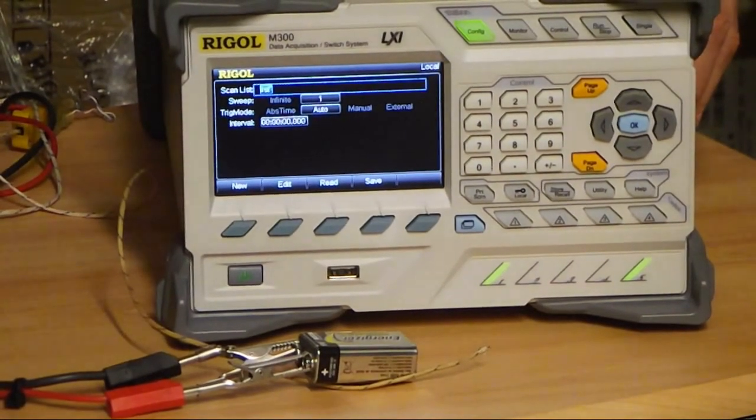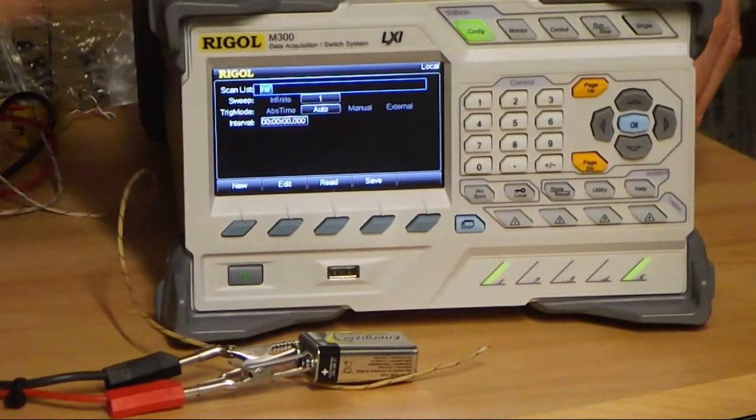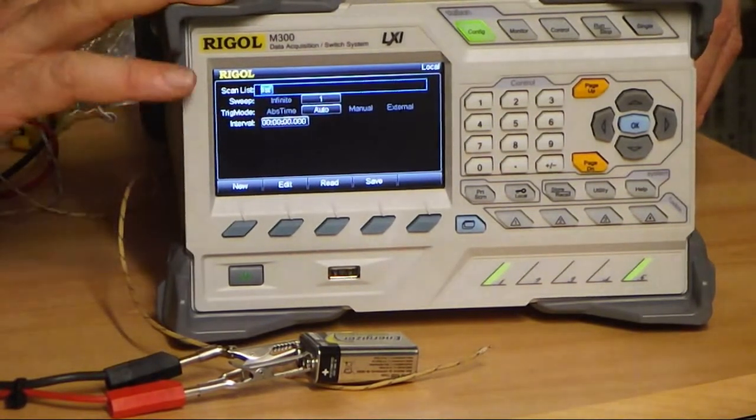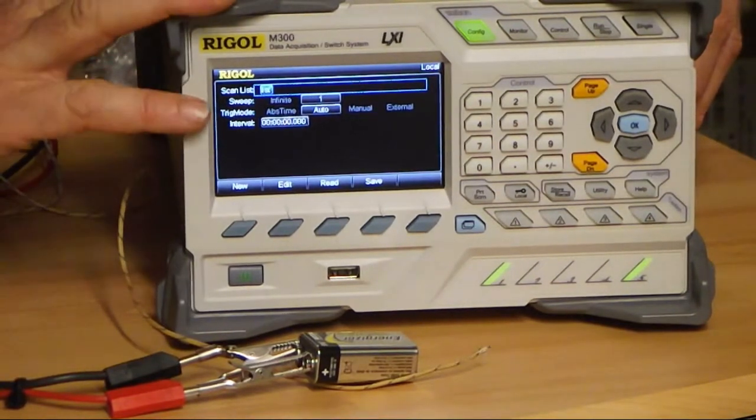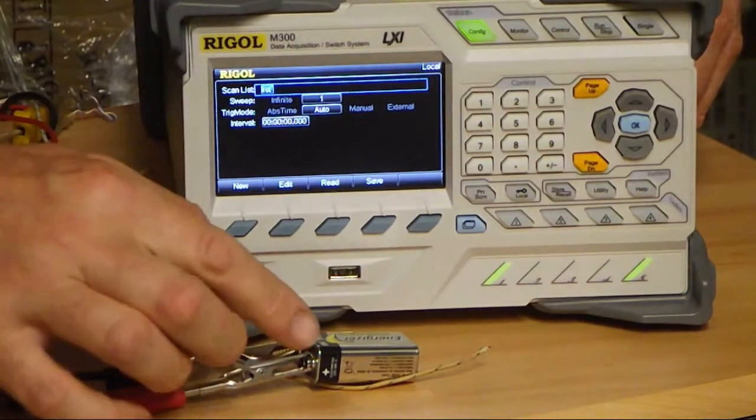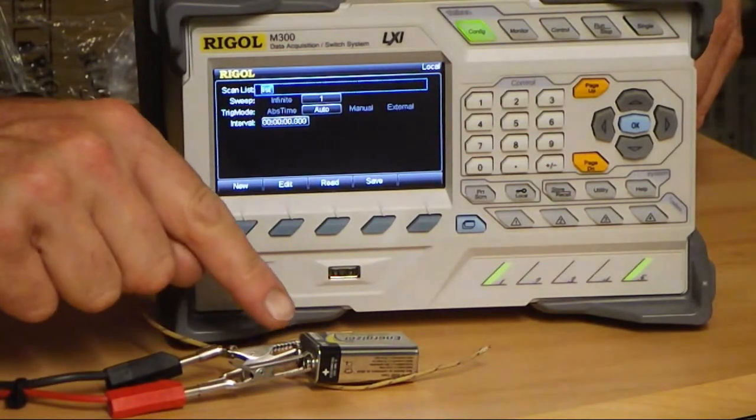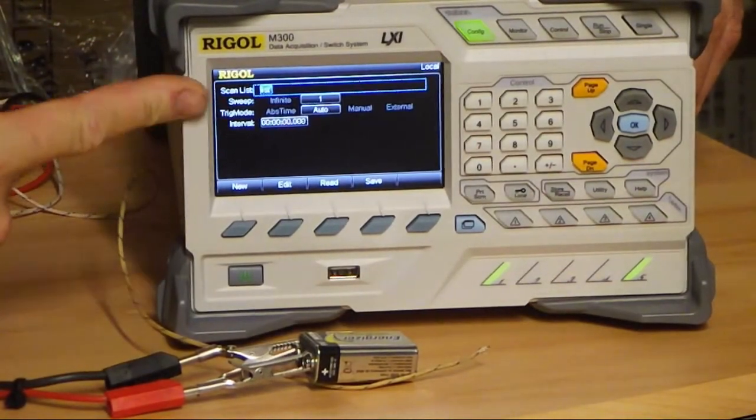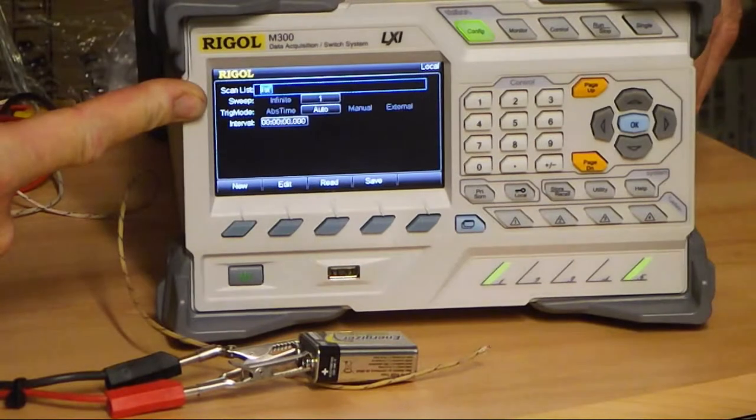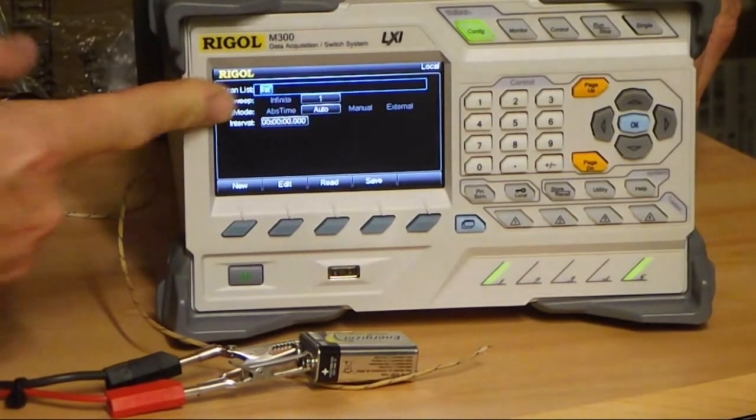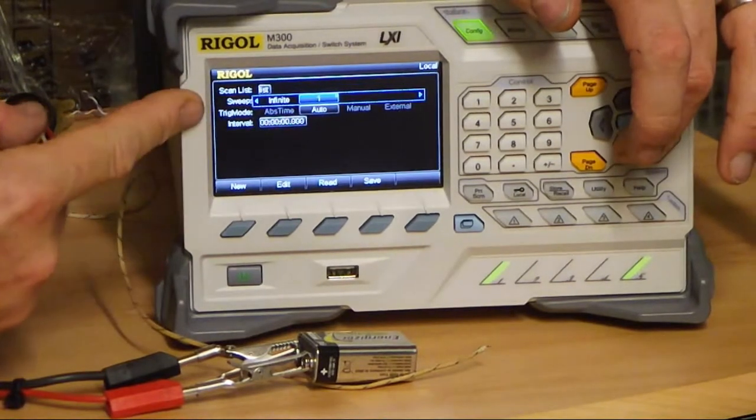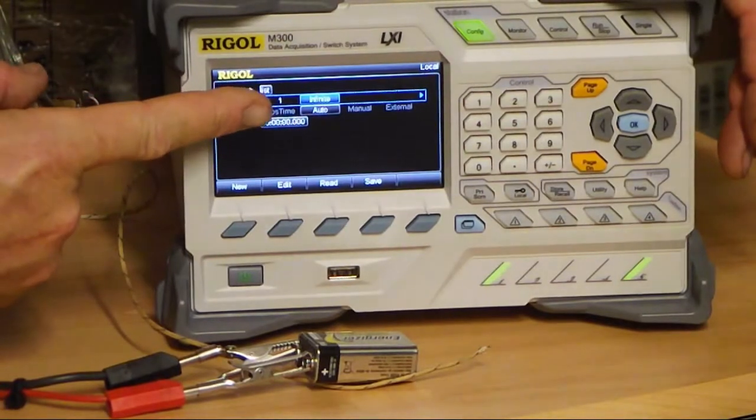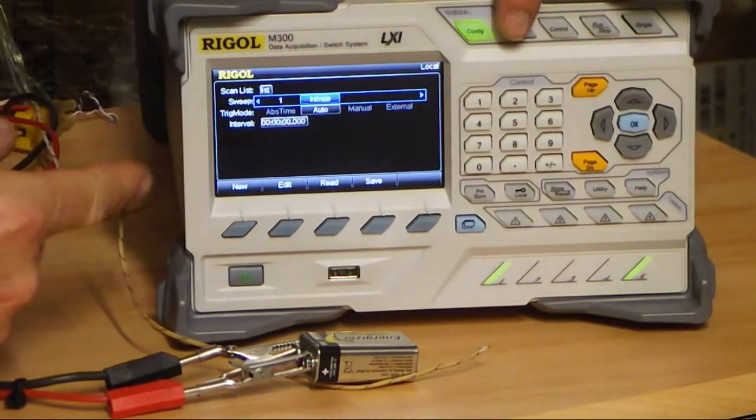So I have just shown you out of the box everything you need to do to physically configure and configure on the front panel a scanning of multiple channels on the M301. And just to prove it, I've got the battery on the DC volts channel and this is the thermocouple. And what I'm going to do is show you what the scan list looks like on the front of the instrument. I'm going to set it so there will be an infinite number of scans of those channels and I'm going to show you both monitoring.